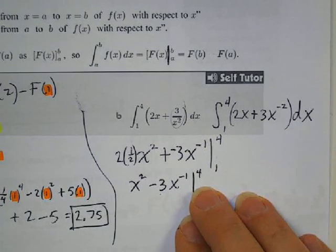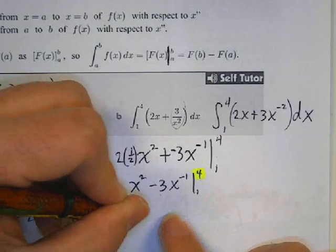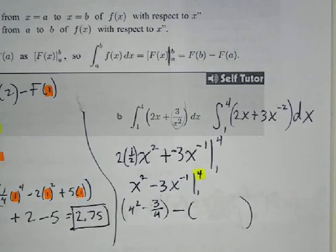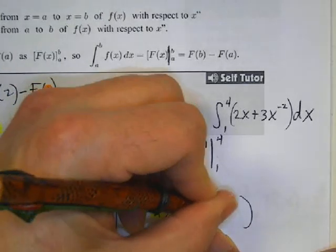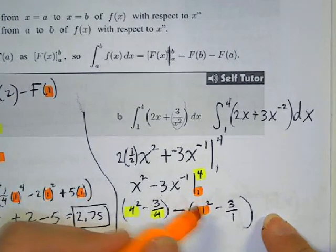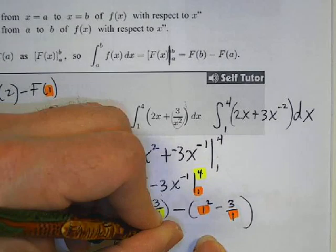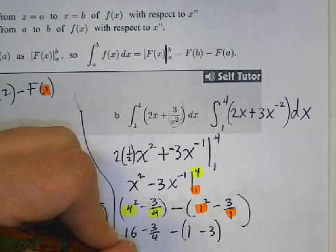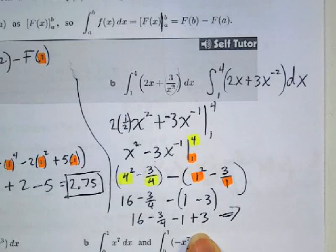Plugging in 4 for x: 4 squared minus 3 over 4. Then plugging in 1 for x: 1 squared minus 3 over 1. Simplifying: 16 minus 3 fourths minus 1 minus 3. Applying distributive property with the negative sign: 16 minus 3 fourths minus 1 plus 3. The answer simplifies to 17.25.